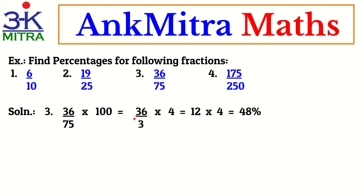For the next step, we divide 36 by the denominator 3 — 36 is divisible by 3 — giving us 12. So we get 12 multiplied by 4, which is 48. The percentage answer for 36/75 is 48%. So if somebody asks: in a 75-mark test a student scores 36 marks, what is his percentage? You calculate it this way and answer that the student scored 48%.